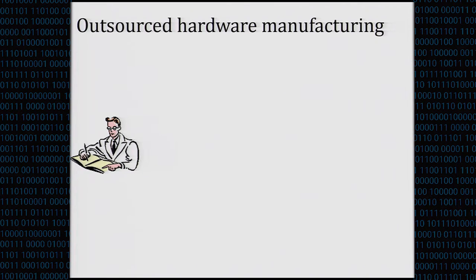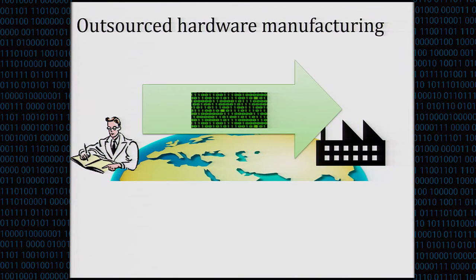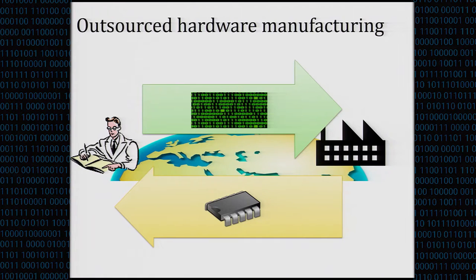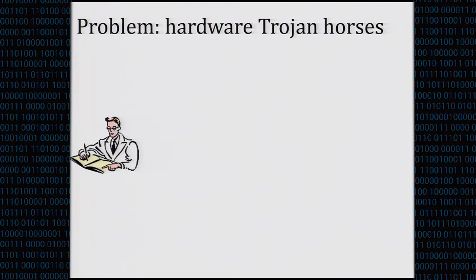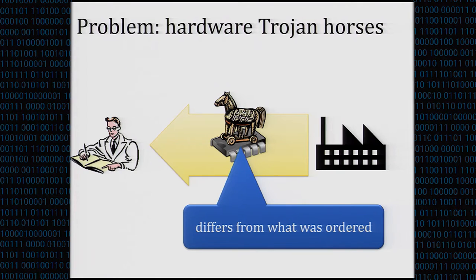Typically nowadays when people design hardware and integrated circuits, they start with some design process — say here in Austria — and then send the description of the circuit to some factory in another country, mostly in China, and then get back the device. The problem discovered some years ago is that there is no reason to trust that the circuits are manufactured correctly. What can happen is that we designed our circuit, sent it to the manufacturer, and received a device that differs from what we ordered — it has a hardware Trojan inside.